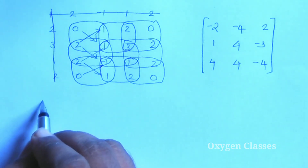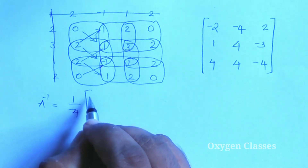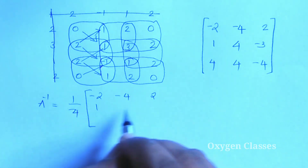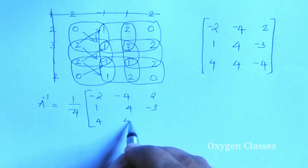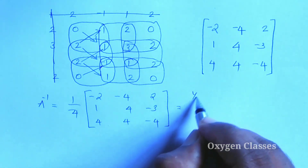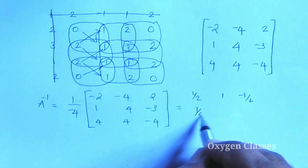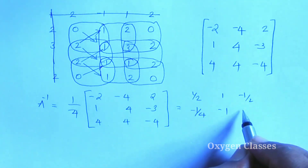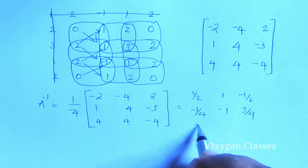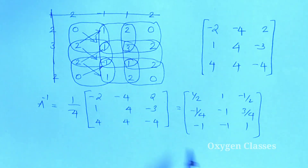Therefore, we can directly write the inverse as: A inverse equals 1 by minus 4 into the adjoint matrix: minus 2, minus 4, 2, 1, 4, minus 3, 4, minus 4. After multiplying, the answer is 1/2, minus 1, minus 1/2, 1/4, minus 1/4, minus 1/4, 3/4, minus 1, minus 1. This is the inverse.